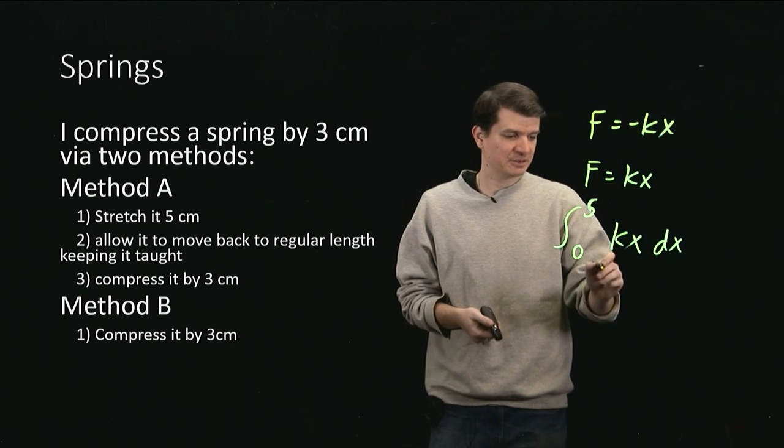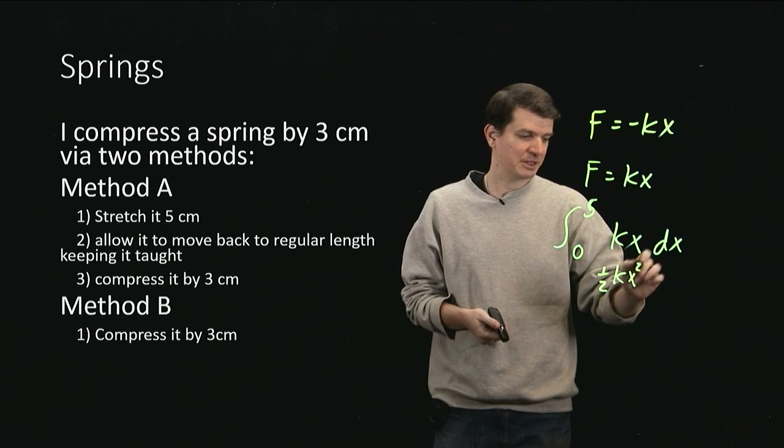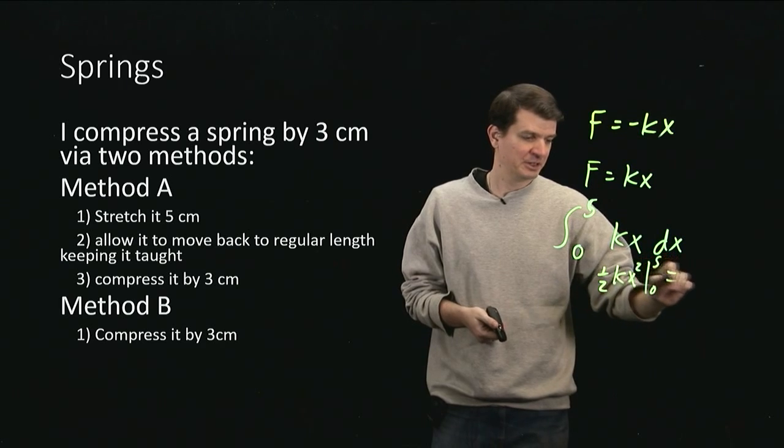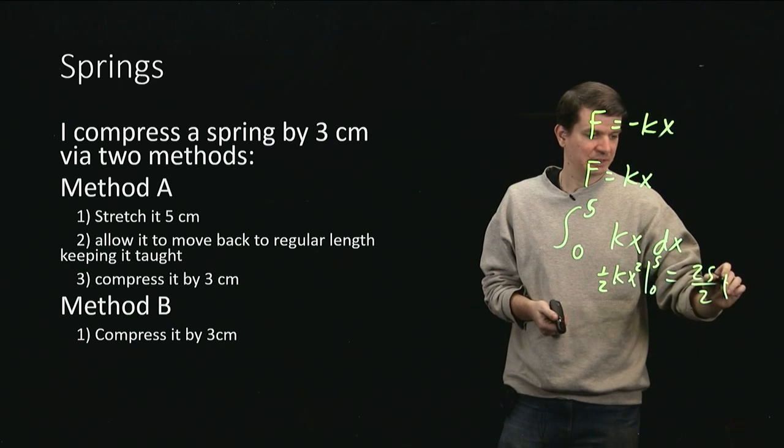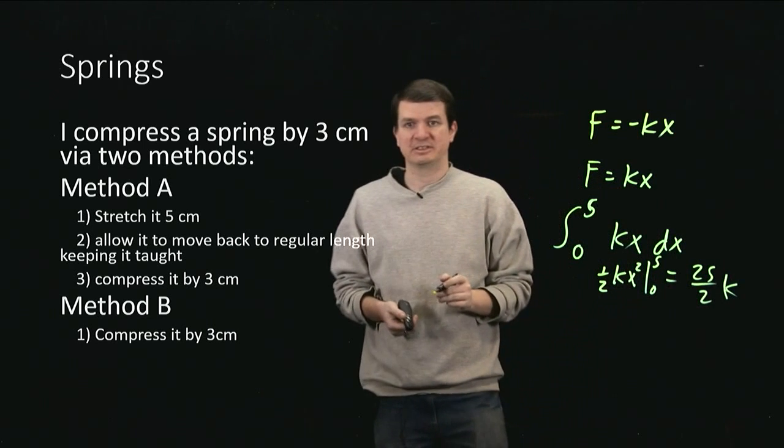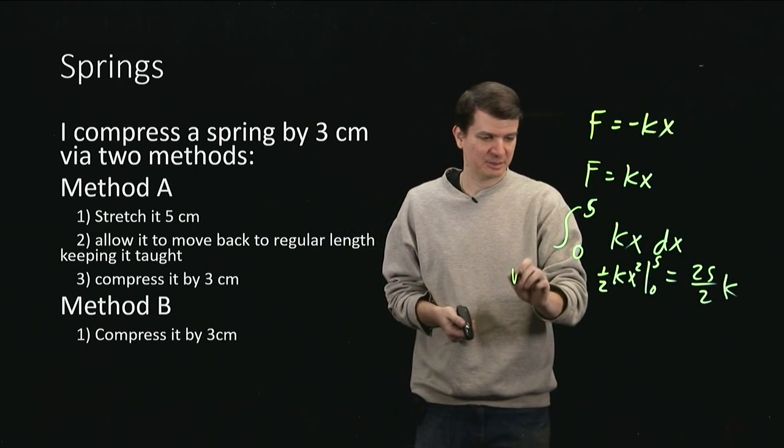So then when I evaluate this, I just get that it's 1 half of kx squared from 0 to 5, which just gives me 25 on 2 times that spring constant, whatever it has to be. So that's the work done in step 1.